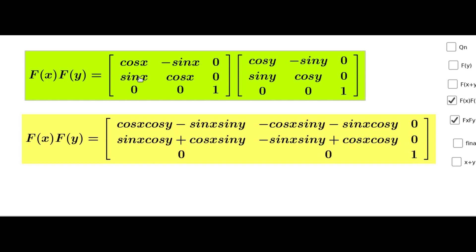Second row, first column: sin x·cos y + cos x·sin y + 0·0 = sin x cos y + cos x sin y. Second row, second column: sin x·(-sin y) + cos x·cos y + 0·0 = cos x cos y - sin x sin y. Second row, third column: sin x·0 + cos x·0 + 0·1 = 0.